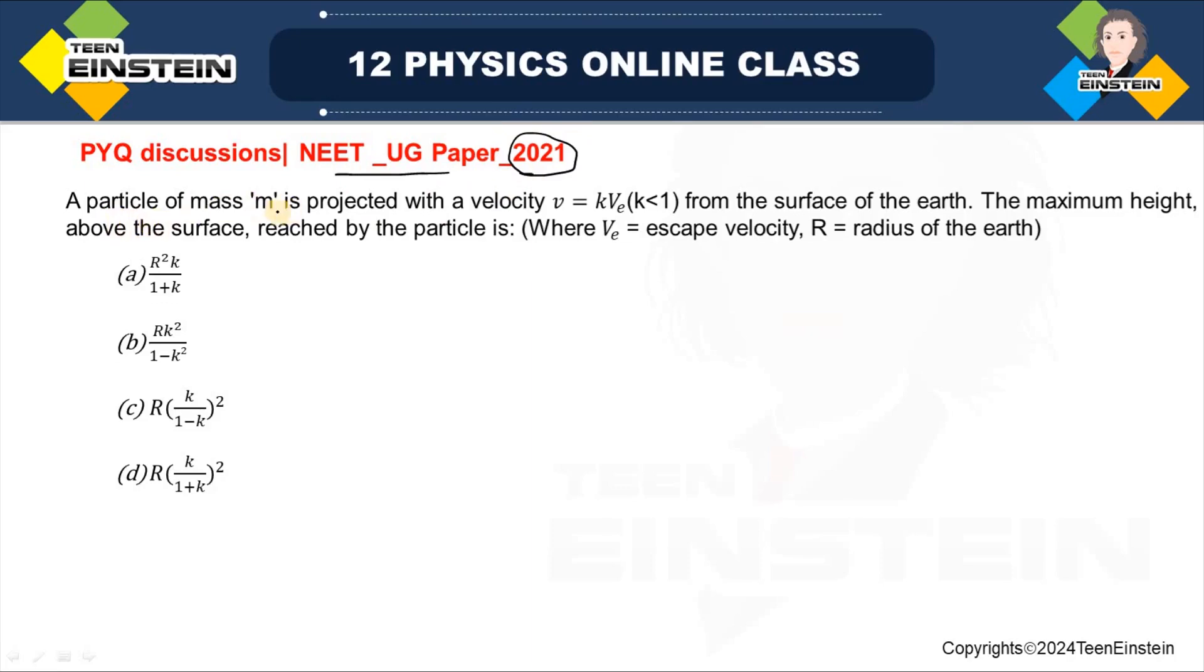The question says: A particle of mass m is projected with a velocity V equal to K times VE, where K is having a value less than 1, from the surface of the Earth.